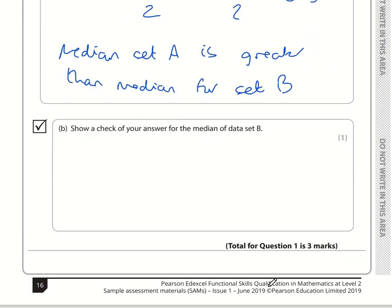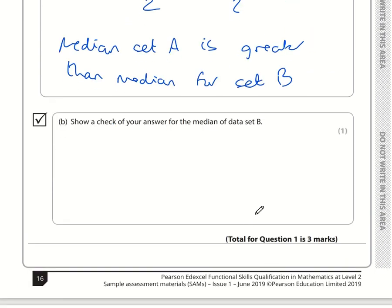Let's check our answer for the median of data set B. We worked out that 11 divided by 2 was 5.5, so minus 11 divided by 2 was minus 5.5. If I multiply minus 5.5 by 2, I get minus 11. So this answer is indeed correct.